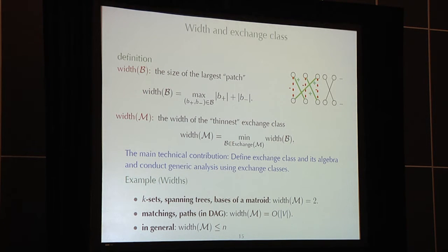The width of the decision class M is actually looking at all the possible exchange classes that can transfer any valid sets to any other valid sets. You find the one that is thinnest, that has the smallest width. For example, if you look at the k sets, the width is actually two, because you can always remove one arm and add another arm, and you do this operation repeatedly to transfer any valid set to any other valid set. Spanning tree also is two, and any basis of a matrix width is two. But for matching and paths, the width would be in the order of size of the vertices, and in general, the width is at most the number of arms in the model. Basically, I have to ignore all the details. The main contribution in our paper, technical contribution, is to define this exchange class and its related algebra, and then we can conduct generic analysis, not particular to a particular problem. It's a general analysis.